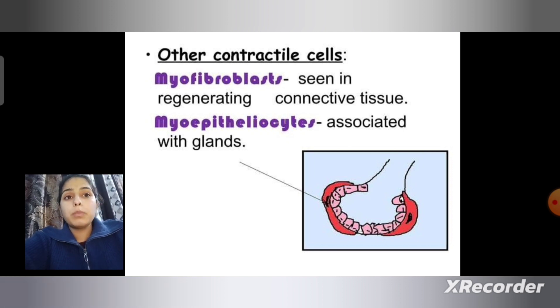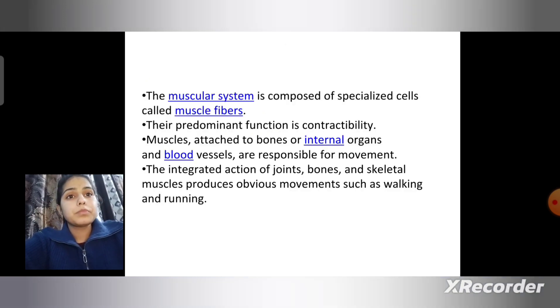Myoepithelial cells are associated with the endocrine glands. The muscular system is composed of specialized cells called muscle fibers. Their predominant function is contractility. Muscles attached to bones or internal organs and blood vessels are responsible for movement.